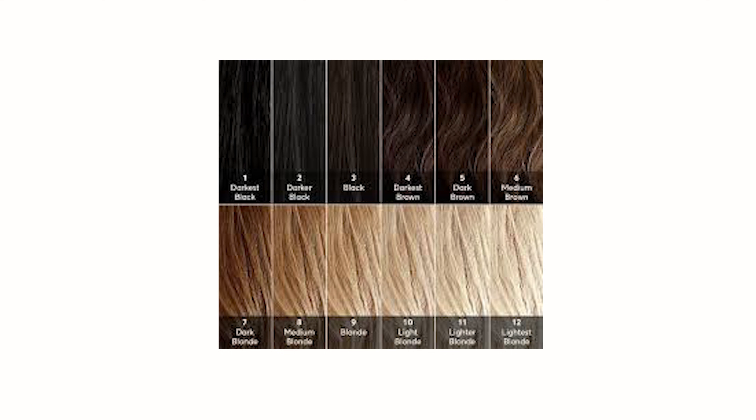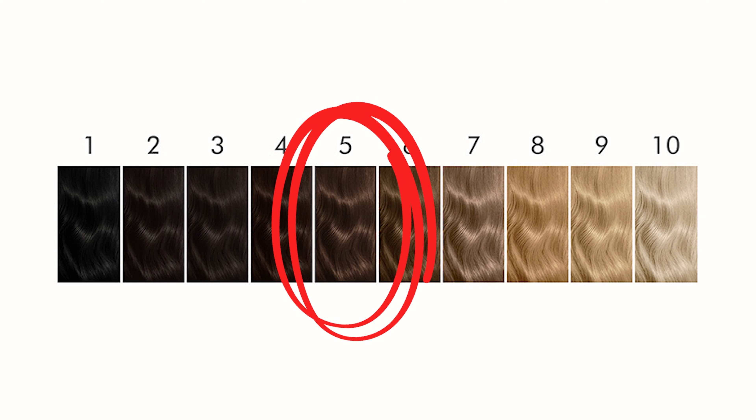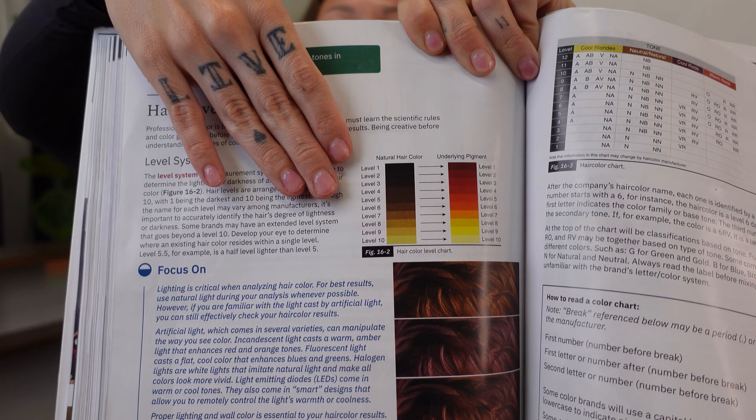Some hair color lines are going to be 1 through 12. So when you're looking at someone's hair, that's a level five — on a scale of lightness to darkness, it's about a level five. It can also be a 5.5, 4.5, or 6.5; they can be halves as well.